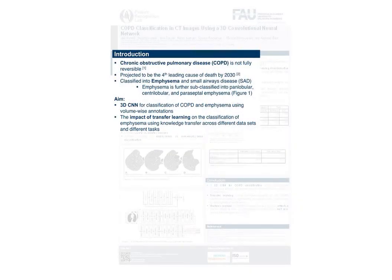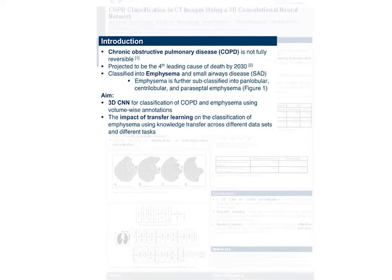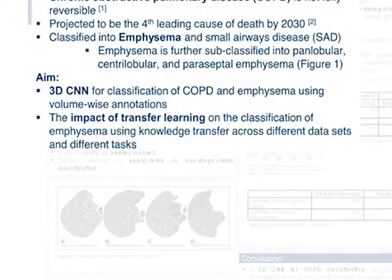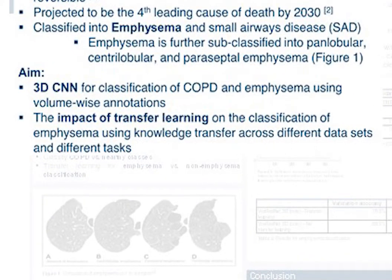During this study, we aimed to develop a 3D CNN-based classification system for COPD and emphysema using volume-wise annotations, and to observe the impact of transfer learning across different datasets — one for COPD, another for emphysema — and different tasks, i.e., COPD classification and emphysema classification.